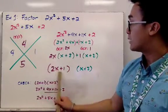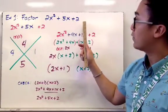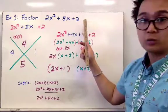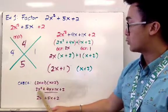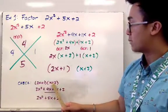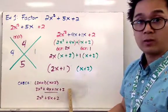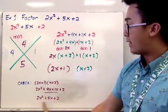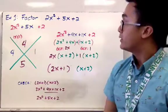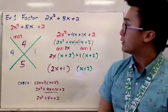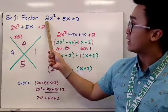So the factors are (2x plus 1) and (x plus 2). We verify by FOILing: 2x times x is 2x squared, 2x times 2 is 4x, 1 times x is 1x, and 1 times 2 is 2. Simplifying gives 2x squared plus 5x plus 2, which matches the original equation.